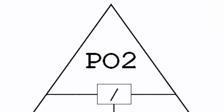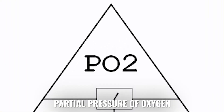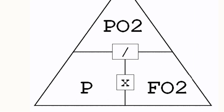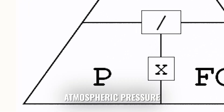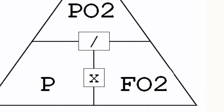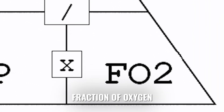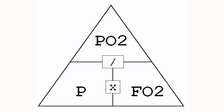At the top of the triangle we have PO2, which stands for partial pressure of oxygen or PPO2. On the bottom left we have P, which stands for pressure or atmospheric pressure. Finally on the bottom right we have FO2, which is the fraction of oxygen — basically the percentage of oxygen represented as a decimal in your gas blend. So if you had 21% air it would be 0.21.